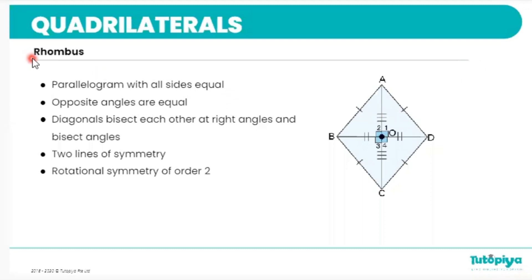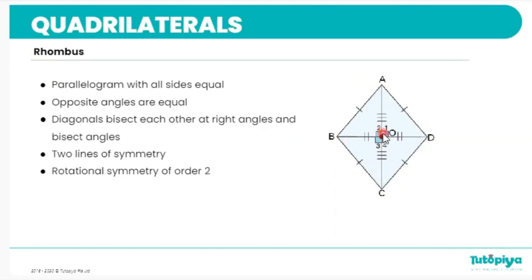The next quadrilateral is a rhombus. A rhombus is a special parallelogram where all sides are exactly the same length. Opposite angles are equal, just like in a parallelogram. The diagonals of a rhombus bisect each other at right angles. The rhombus has two lines of symmetry and rotational symmetry of order two.